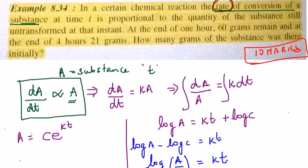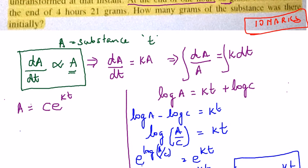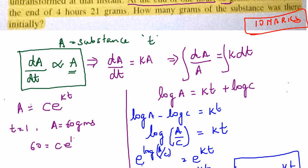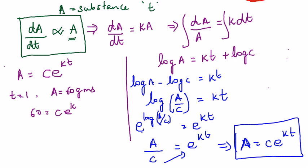In the problem, at the end of 1 hour, 60 grams remain. So when t = 1, A = 60. Substituting into A = Ce^(kt): 60 = Ce^(k×1) = Ce^k. This is our first equation.